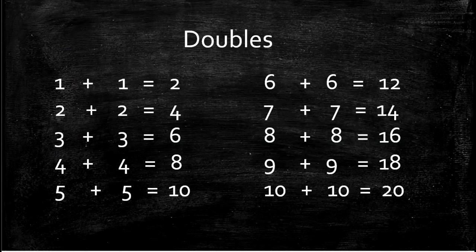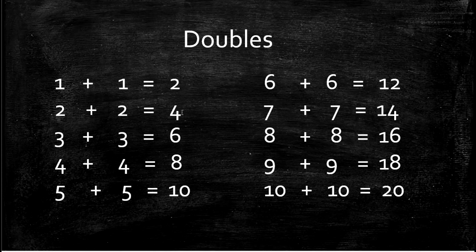So let's look at our doubles — they add up to the even numbers: 2, 4, 6, 8, 10, 12, 14, 16, 18, 20. Say these with me: 1 plus 1 equals 2. 2 plus 2 equals 4. 3 plus 3 equals 6. 4 plus 4 equals 8. 5 plus 5 equals 10. 6 plus 6 equals 12. 7 plus 7 equals 14. 8 plus 8 equals 16. 9 plus 9 equals 18. 10 plus 10 equals 20.